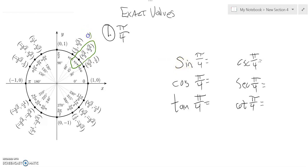Remember sine is y, and cosine is x. Sine is about height, and cosine is about width. So the sine is root 2 over 2. The cosine is root 2 over 2.